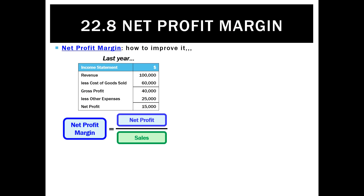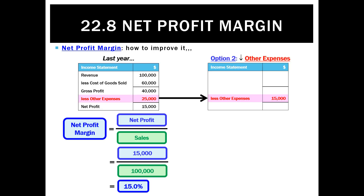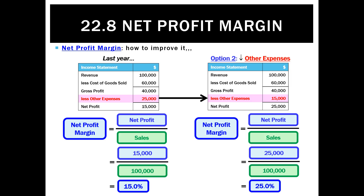The second way is to use better expense control. Looking at last year, we earned a net profit of 15%. If we can't change how we buy and sell stock, we can fix the other expenses — getting them down from $25,000 to $15,000. Since gross profit stays the same at $40,000, lowering other expenses brings net profit up to $25,000. With sales still at $100,000, that gives a net profit margin of 25% — a big increase. The two ways to improve net profit margin are to improve gross profit and to lower other expenses.